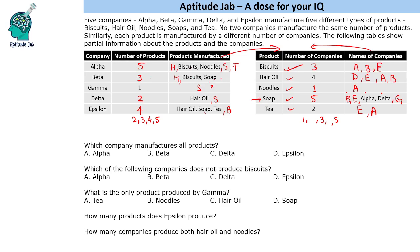Now let us answer the questions. Which company manufactures all products? Alpha manufactures all products. Which of the following companies does not produce biscuits? Biscuits is produced by Alpha, Beta, and Epsilon, so Delta does not produce biscuits. What is the only product produced by Gamma? Gamma produces soap. How many products does Epsilon produce? Epsilon produces 4 items. How many companies produce both hair oil and noodles? Hair oil and noodles are both in Alpha, and since noodles is produced by only one company, Alpha is the only company that produces both hair oil and noodles.